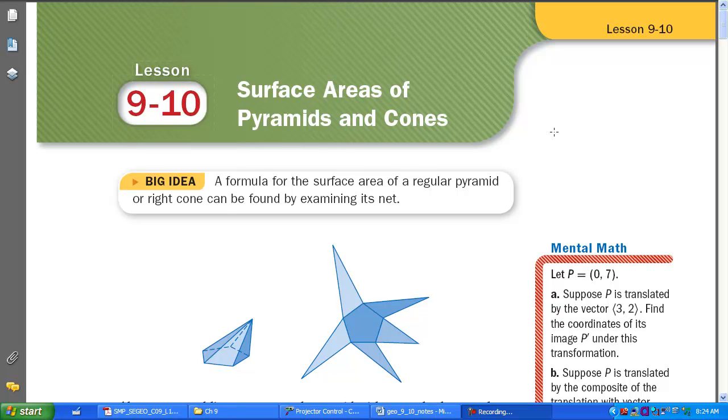In lesson 9-9, we discussed surface area and lateral area of prisms and cylinders. We talked about how the surface area is made up of the sum of the lateral area plus the area of the two bases. We had a nice simple formula for that: lateral area plus 2B. It's very similar with pyramids and cones. We have a formula for surface area, which is once again lateral area plus, but this time the area of the base.